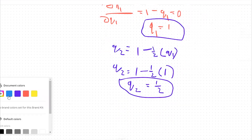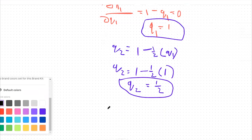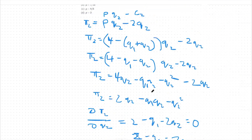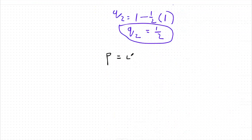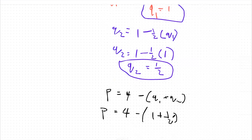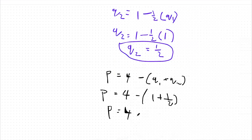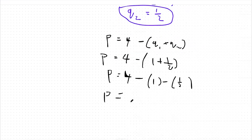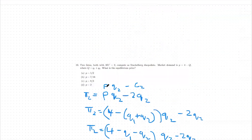Finally, we're looking for the equilibrium price. P equals four minus big Q, which is Q1 plus Q2. We found Q1 equals one and Q2 equals one-half. Adding those together: P equals four minus one and one-half, which means P equals two and one-half, also equivalent to five over two — that's answer choice A.